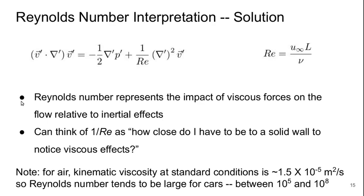Welcome to Part 3 of Lecture 2 of Bluff Body Aerodynamics. So let's again discuss this interpretation of Reynolds number. What the Reynolds number really is, is a number that represents the impact of viscous forces on the flow relative to those of inertial effects. We can think of 1 over the Reynolds number as how close do I have to be to a solid wall to notice viscous effects.